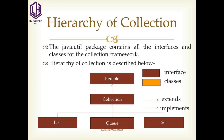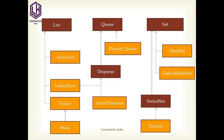How is the collection hierarchically located? It means which interfaces and classes are present in the collection framework. The java.util package contains all these interfaces and classes. The hierarchy is explained in the figure. The brown boxes represent interfaces and the yellow boxes represent classes.